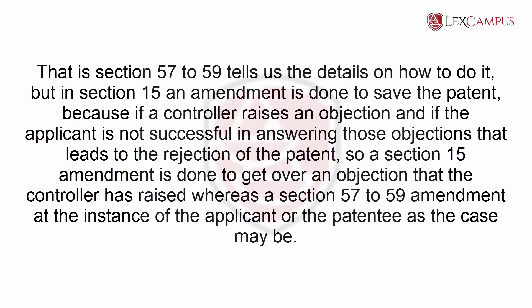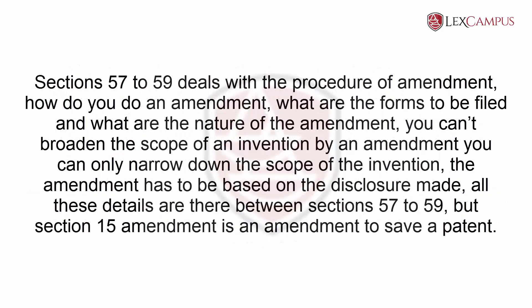A Section 15 amendment is done to save the patent, because if a controller raises an objection and the applicant is not successful in answering those objections, that leads to the rejection of the patent. So a Section 15 amendment is done to get over an objection that the controller has raised, whereas a Sections 57 to 59 amendment can be done at the instance of the applicant or the patentee, as the case may be.